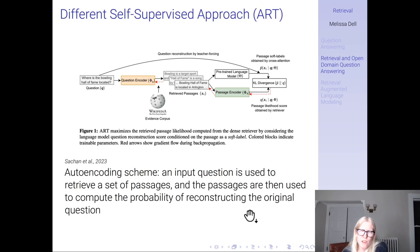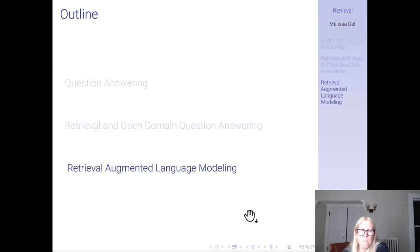SPIDER is not the only approach — there have been a variety of self-supervised training methods for retrievers. Another approach is called ART, which is essentially an auto-encoding scheme: you take an input question, use it to retrieve a set of passages, and those passages are then used to compute the probability of reconstructing the original question.